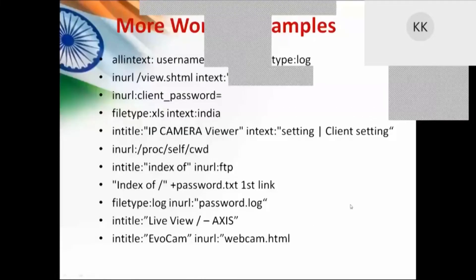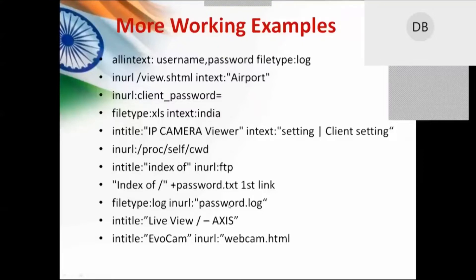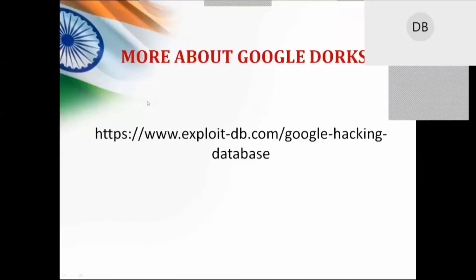There are multiple examples and combinations we can use here. We can use cameras which are vulnerable and not secured. We can even get passwords from .txt files and many other things. This is the link from where you can get a lot of Google Dorking operators and how to use them — the Google Hacking Database. You can find out what all operators have been used by attackers to get information.